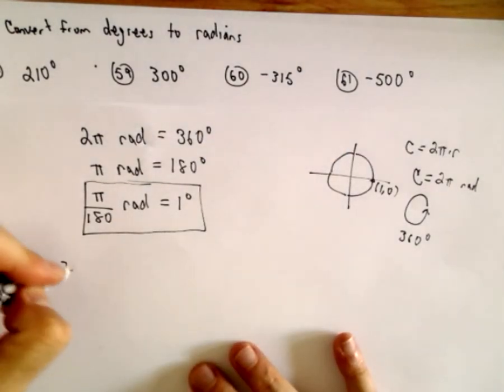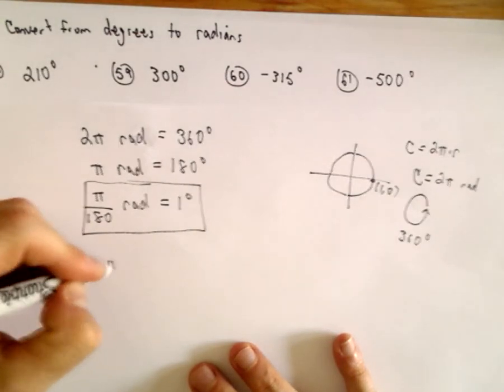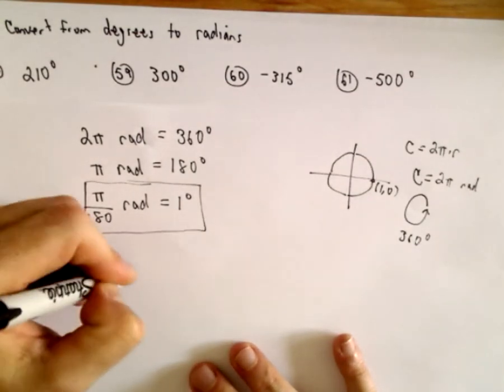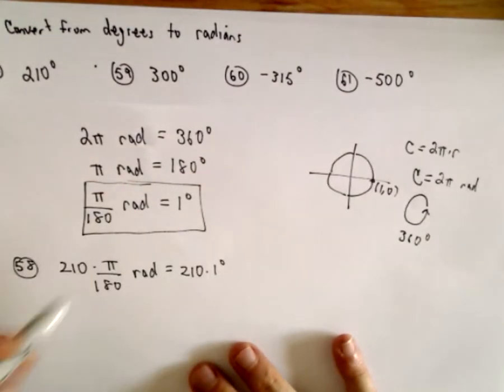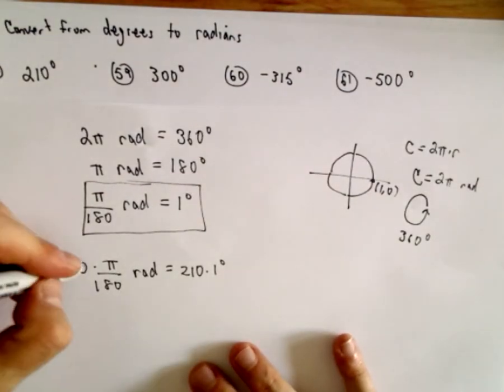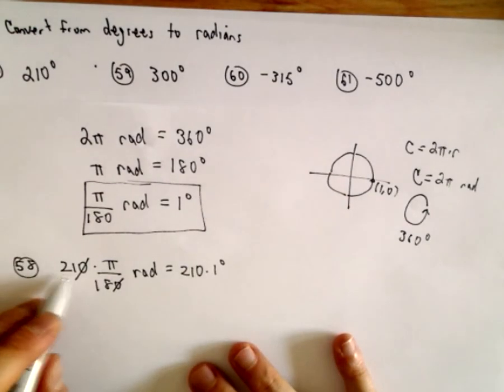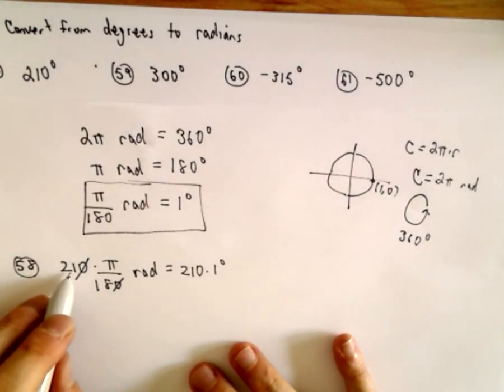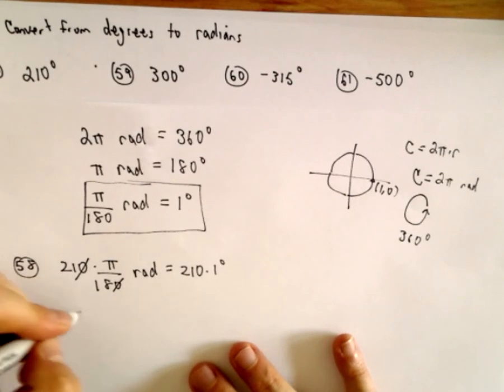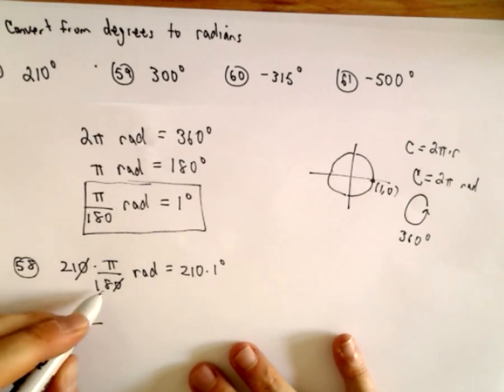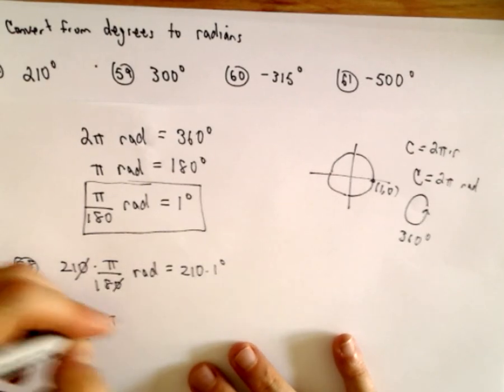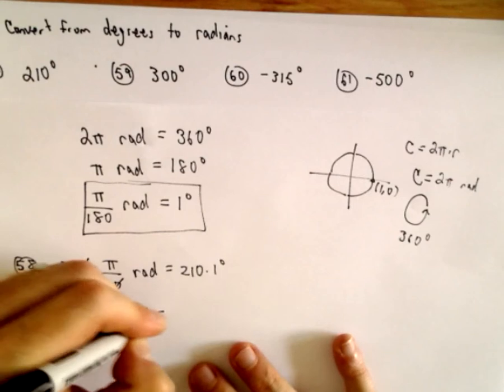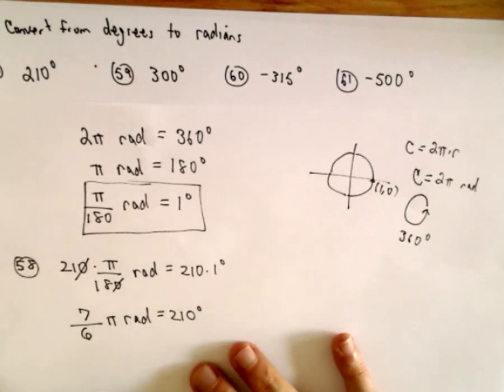So for number 58, if we multiply both sides by 210, well, let's see, 210 divided by 180, we can get rid of a zero. 21 divided by 18, 3 will go into both of those. 3 will go into 21 seven times. 3 will go into 18 six times. So we'll be left with 7 over 6 pi radians. That's going to be the same thing as 210 degrees.